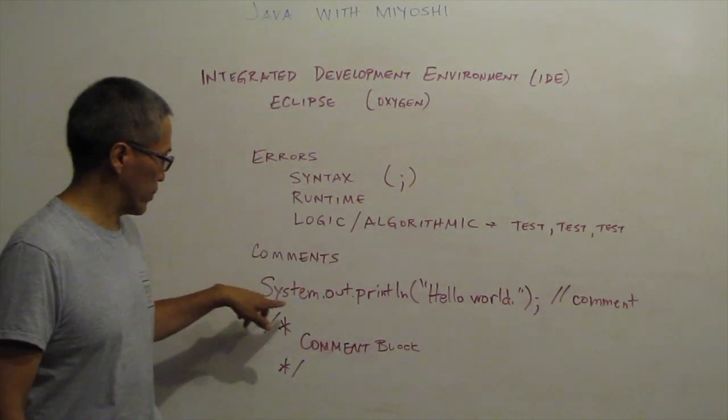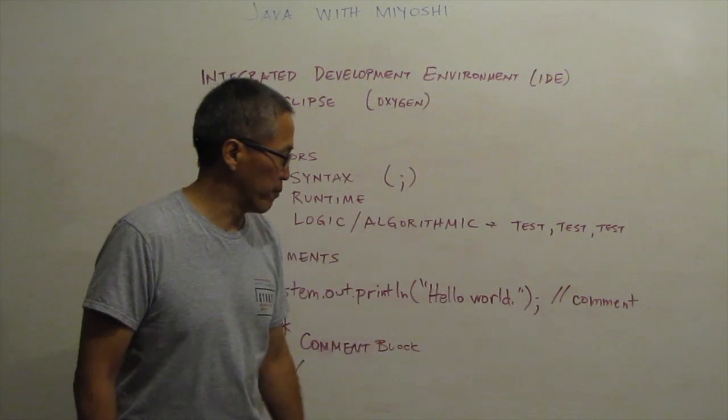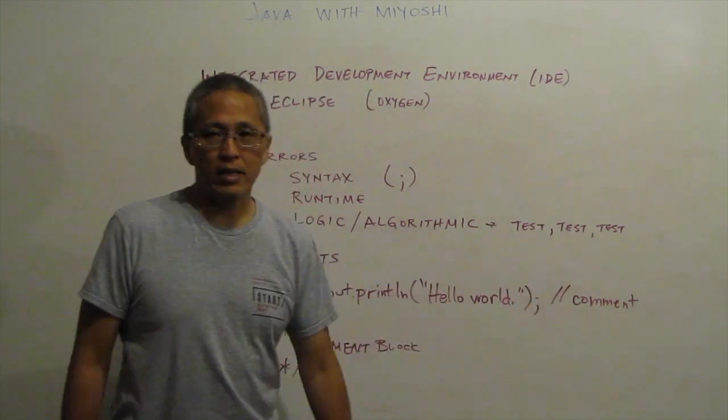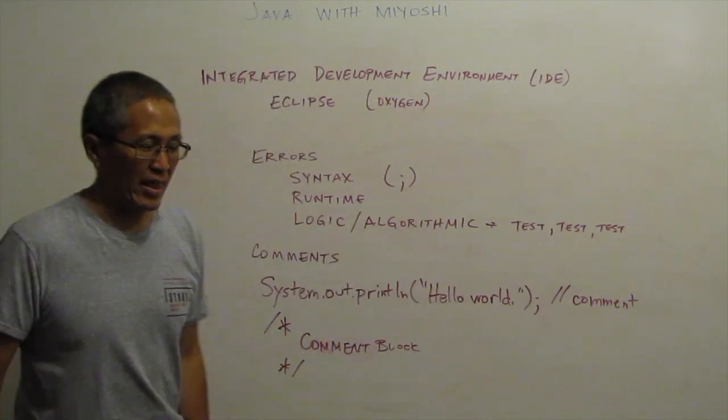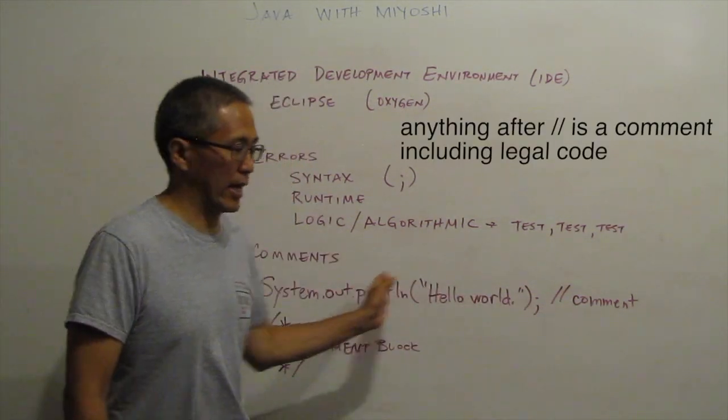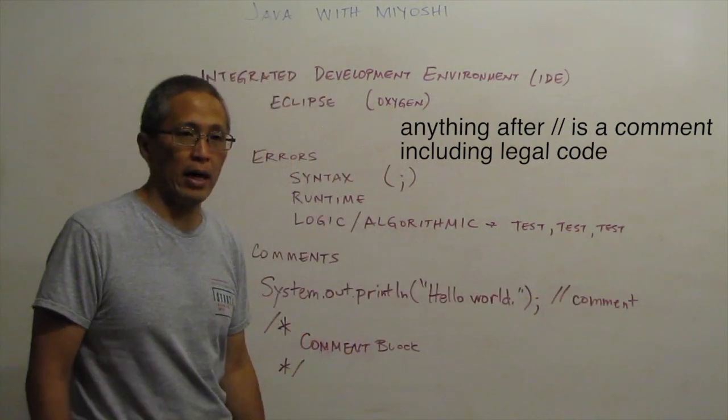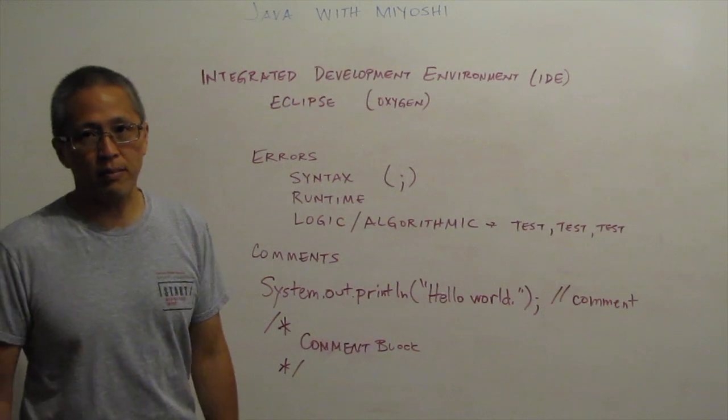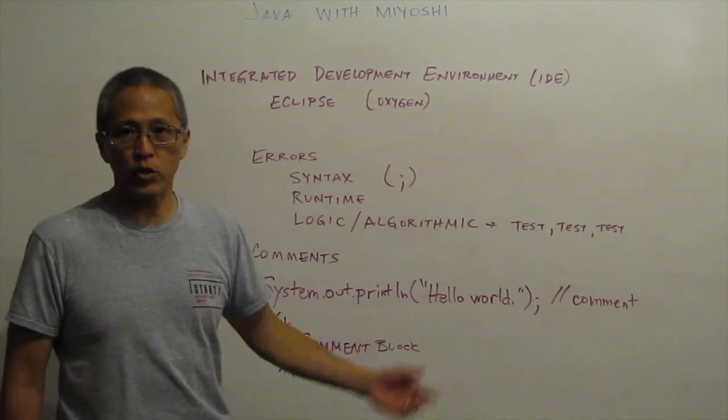A couple of things about comments. Here's my system out dot print line again. Hello world. I have a comment at the end of that code, a slash slash gives you comments. And that will comment from whatever that slash slash is to the end of the line. That is all comments. And comments again are not compiled. The compiler doesn't care about them. The computer doesn't care about them. They're just there for you as the coder.